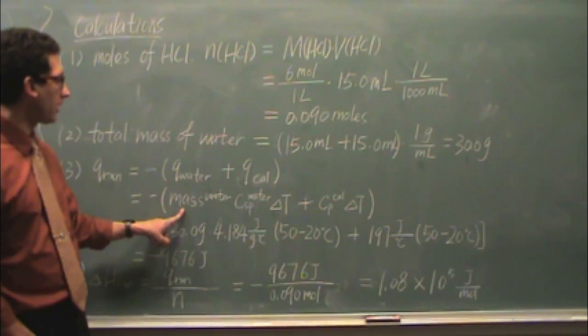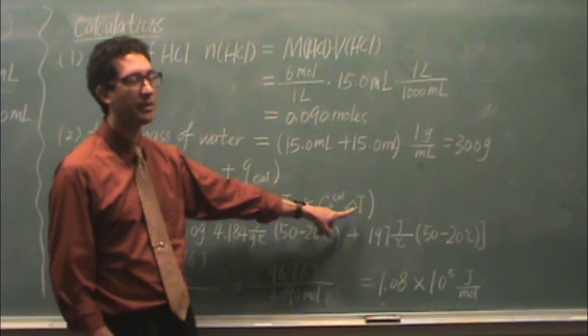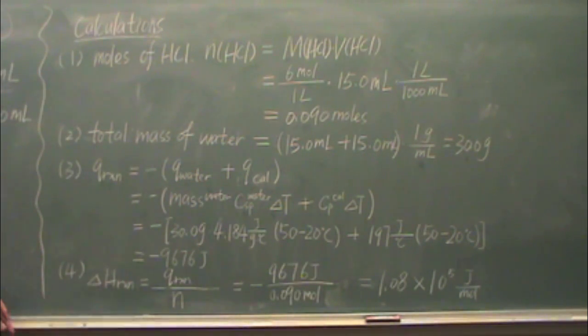Now these two Qs though are associated with temperature changes. Just like before, Q of water is MCP delta T, Q cal is CP delta T. CSP here, CP there.